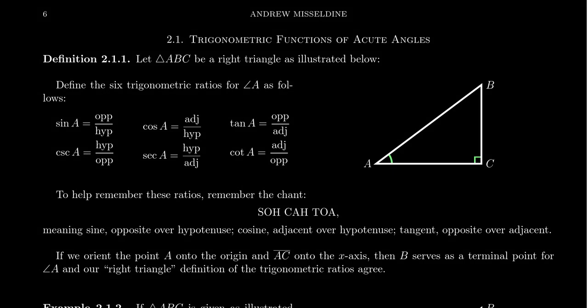In this video, I want to introduce the idea of right triangle trigonometry. We've defined the six trigonometric ratios — sine, cosine, tangent, cosecant, secant, and cotangent — with respect to an angle, using a terminal point on the terminal side of the angle. But we can also define the six trigonometric ratios with respect to an angle of a right triangle, specifically one of the non-right angles.